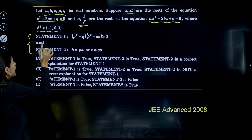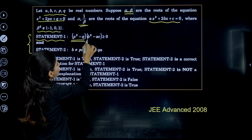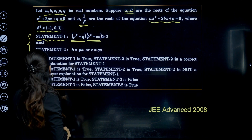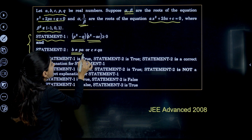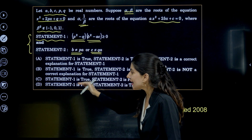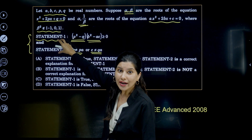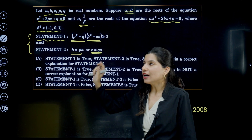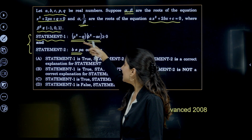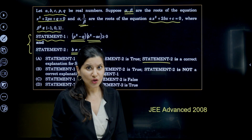Two statements are given. Statement 1 says that (P² − Q)(B² − AC) is non-negative. Statement 2 says that B is not equal to PA and C is not equal to QA. The options ask whether both statements are correct or incorrect, and if both are correct, whether Statement 2 is the correct explanation of Statement 1.